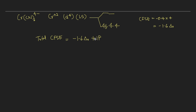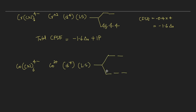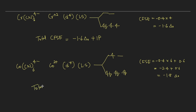Now consider Co(CN)₆⁴⁻: cobalt is in +2 state, d7 system, low spin complex. Filling seven electrons in low spin: six in t2g and one in eg. CFSE = 6 × (−0.4·Δo) + 1 × (0.6·Δo) = −2.4·Δo + 0.6·Δo = −1.8·Δo. Many students will say total CFSE = −1.8·Δo + 3P because they see three pairings, but that is incorrect.